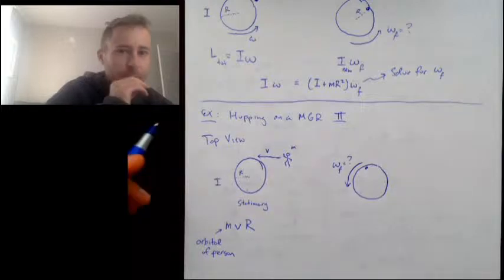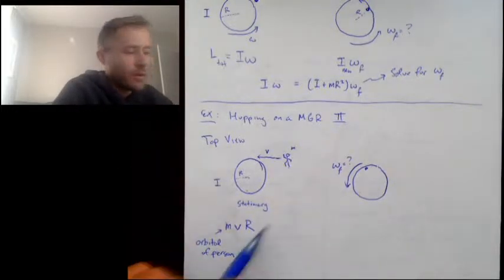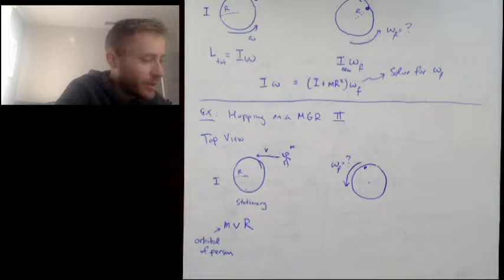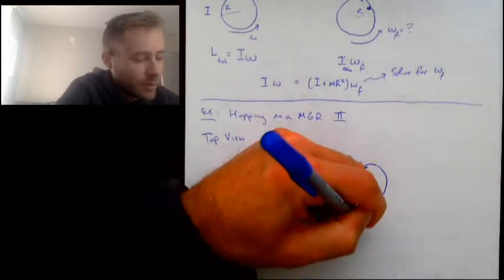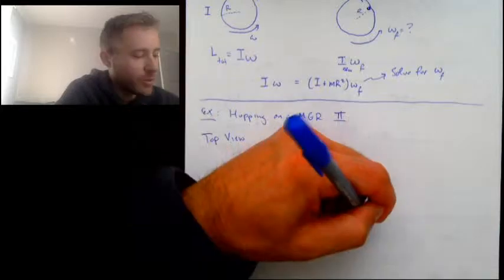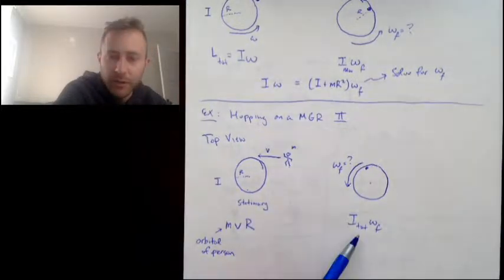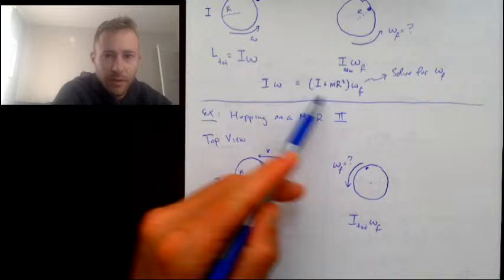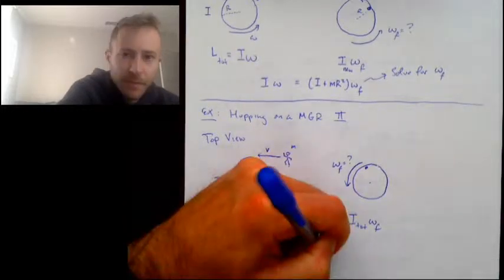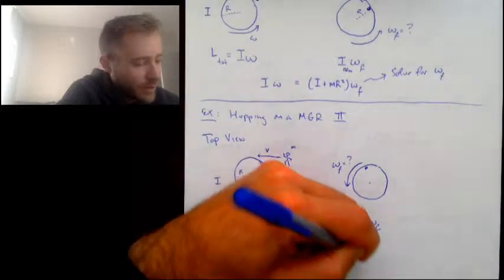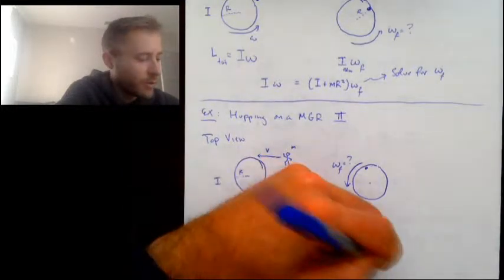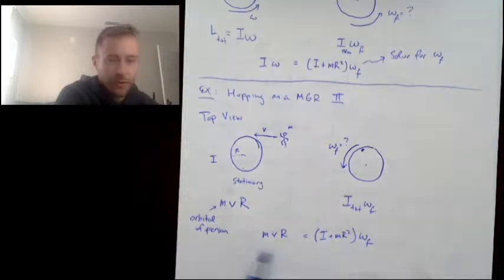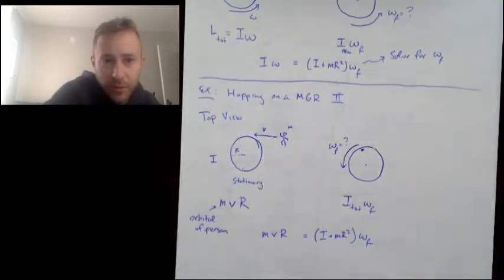The initial angular momentum is MVR — the orbital angular momentum of the person. Afterwards, the system is spinning, so we have spin angular momentum: the total inertia times omega-final. The total inertia is the inertia of the merry-go-round plus the inertia of the person on the edge, all times omega-final. This equation expresses angular momentum conservation, and we can use it to solve for omega-final.